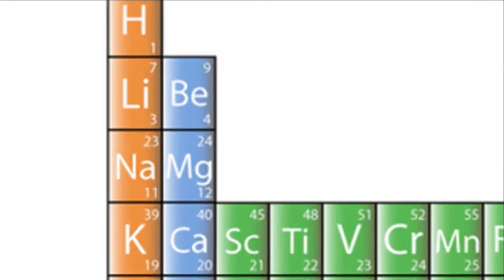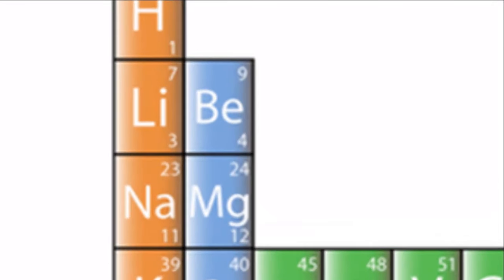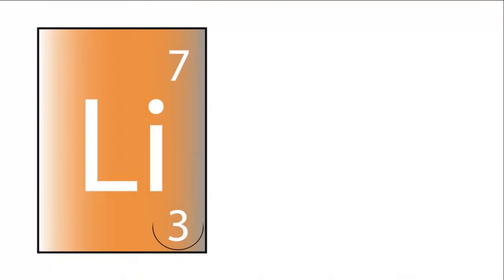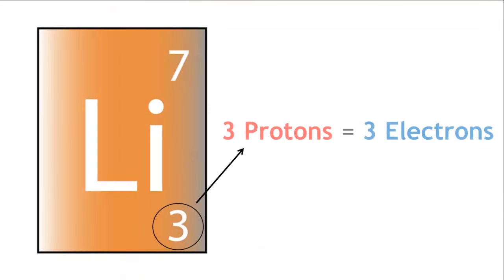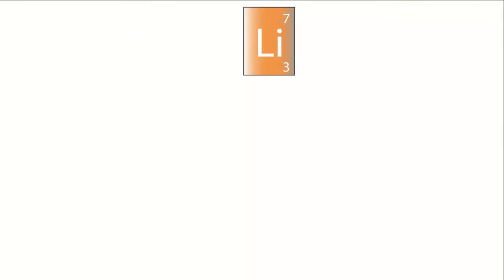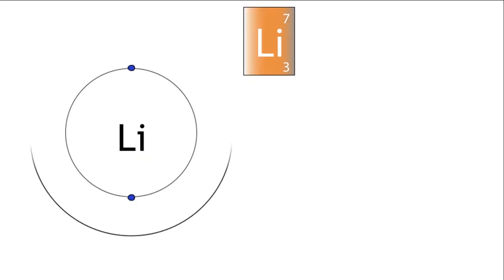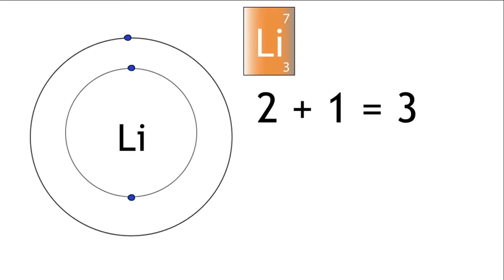Let's look at some arrangements. Lithium has three protons, therefore it has three electrons. The first two electrons are placed in the first shell, closest to the nucleus, and the third electron is placed in the second shell. Two plus one: three electrons.